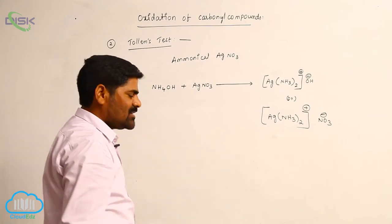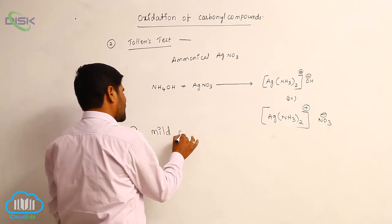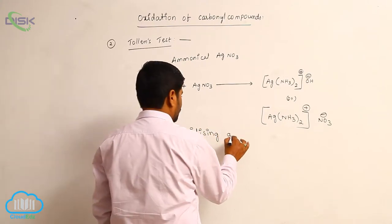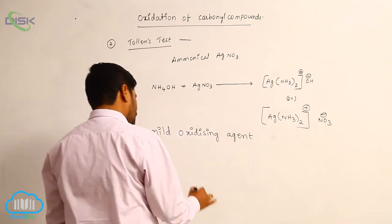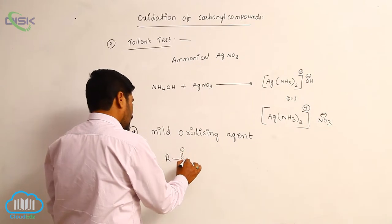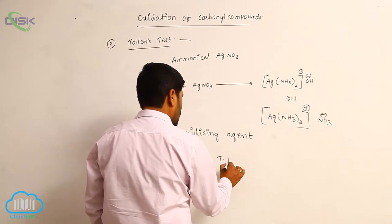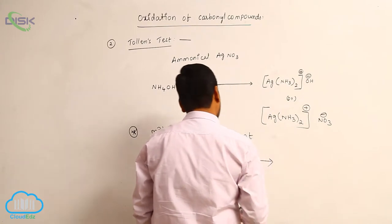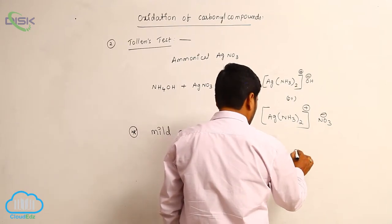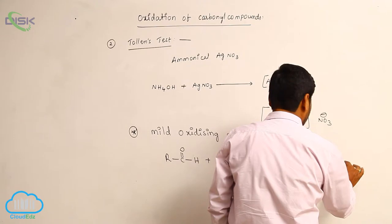Tollens reagent generally acts as a mild oxidizing agent. When an aldehyde reacts with Tollens reagent, followed by heating, the aldehyde is converted to a carboxylate ion (R-COO⁻), and metallic silver is formed.